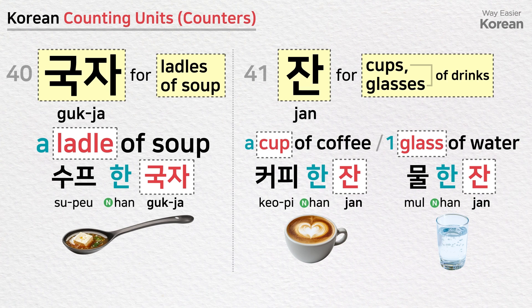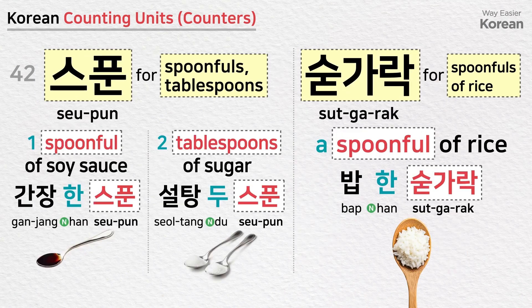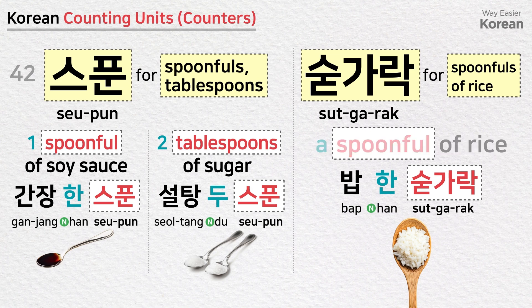잔 is a counting unit for cups or glasses of drinks: a cup of coffee — 커피 한 잔; a glass of water — 물 한 잔. 스푼 is a counting unit for spoonfuls or tablespoons: one spoonful of soy sauce — 간장 한 스푼; two tablespoons of sugar — 설탕 두 스푼. 숟가락 is the Korean word for spoon and is used as a counter for spoonfuls of rice: a spoonful of rice — 밥 한 숟가락.